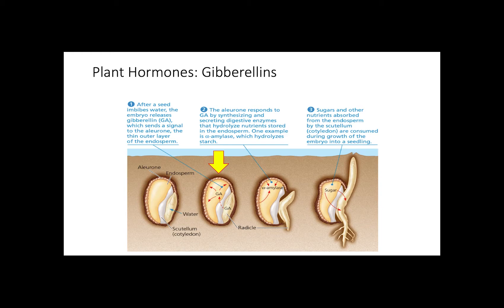After seeds get water, gibberellins are released and they send signals to the outer layer of the endosperm, or seed coating. Then, enzymes are released to hydrolyze nutrients in the coating. Finally, sugars and other nutrients are absorbed during the growth of a seedling.